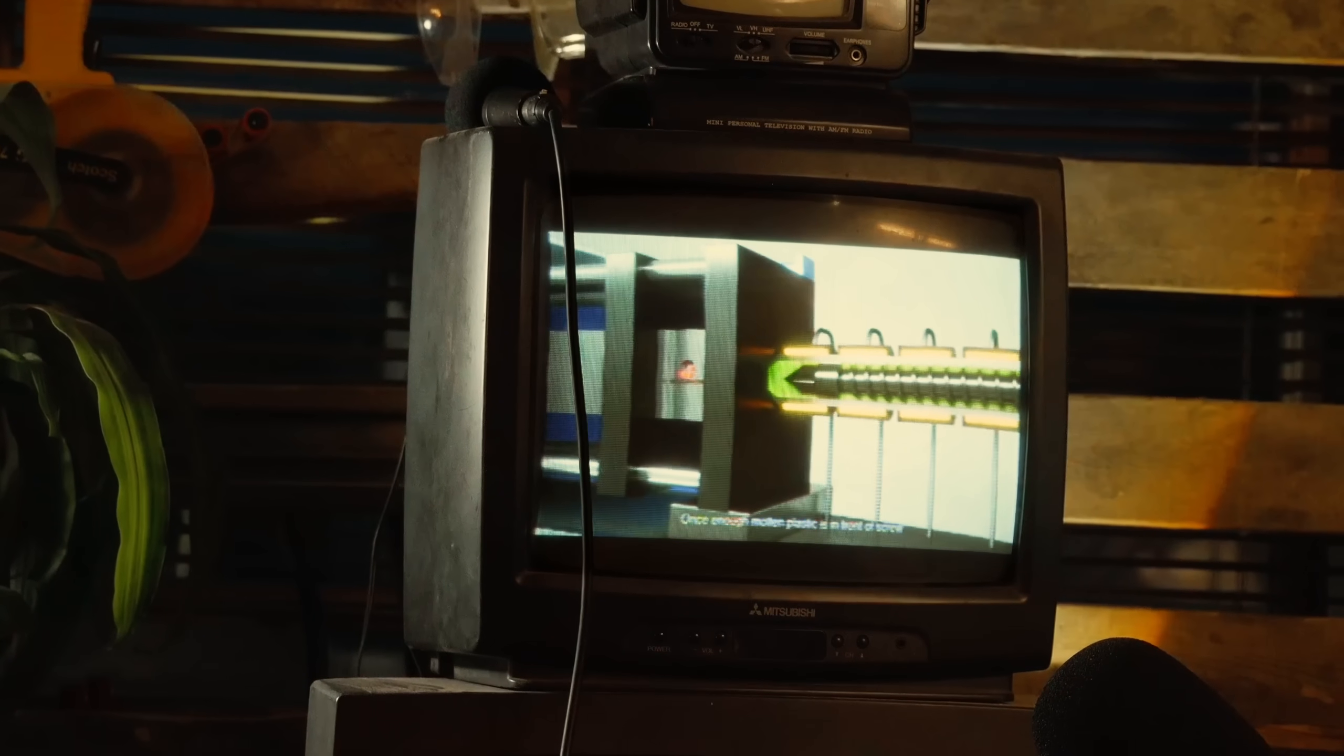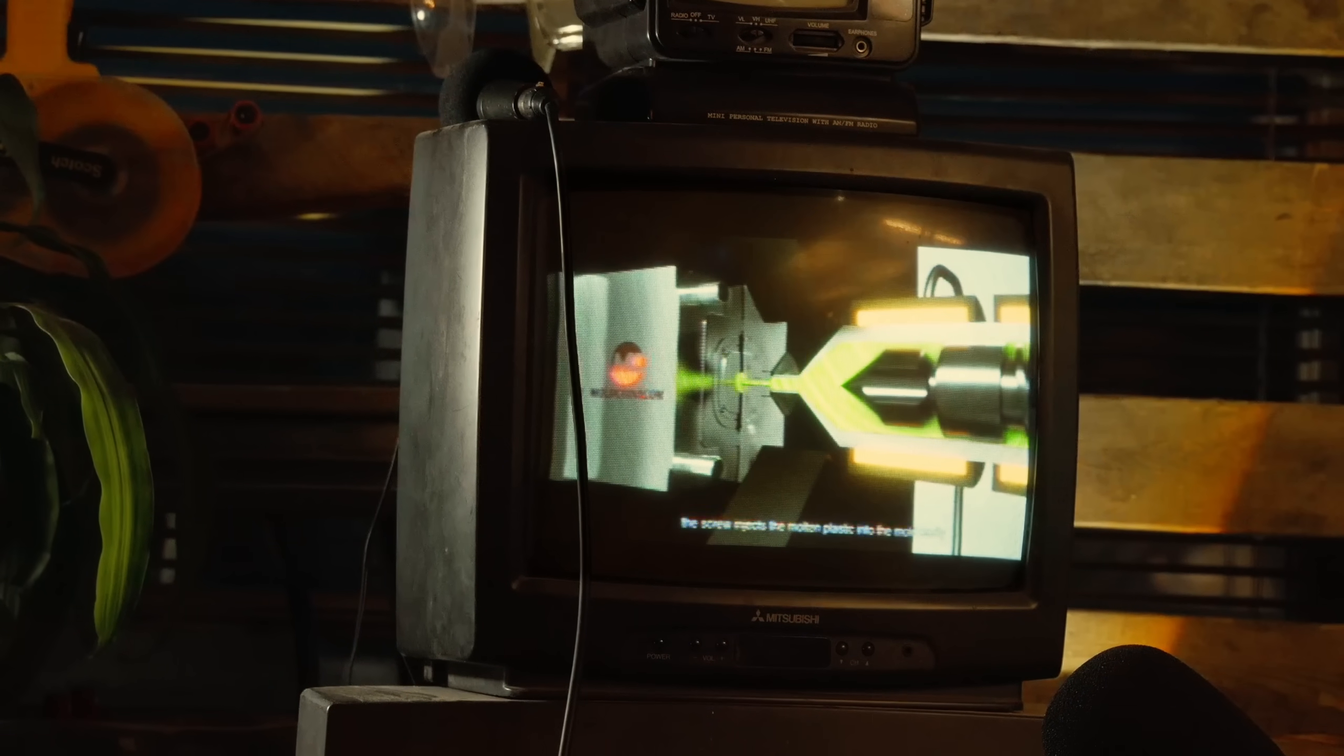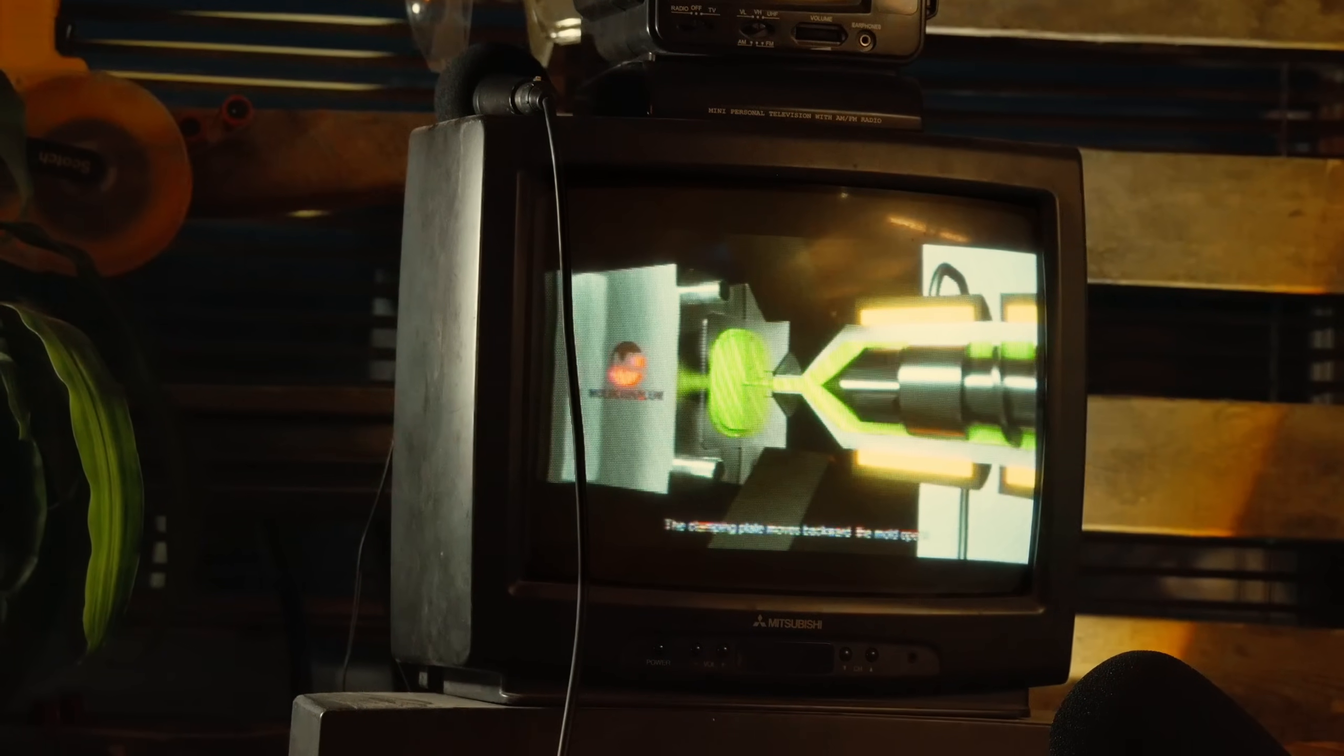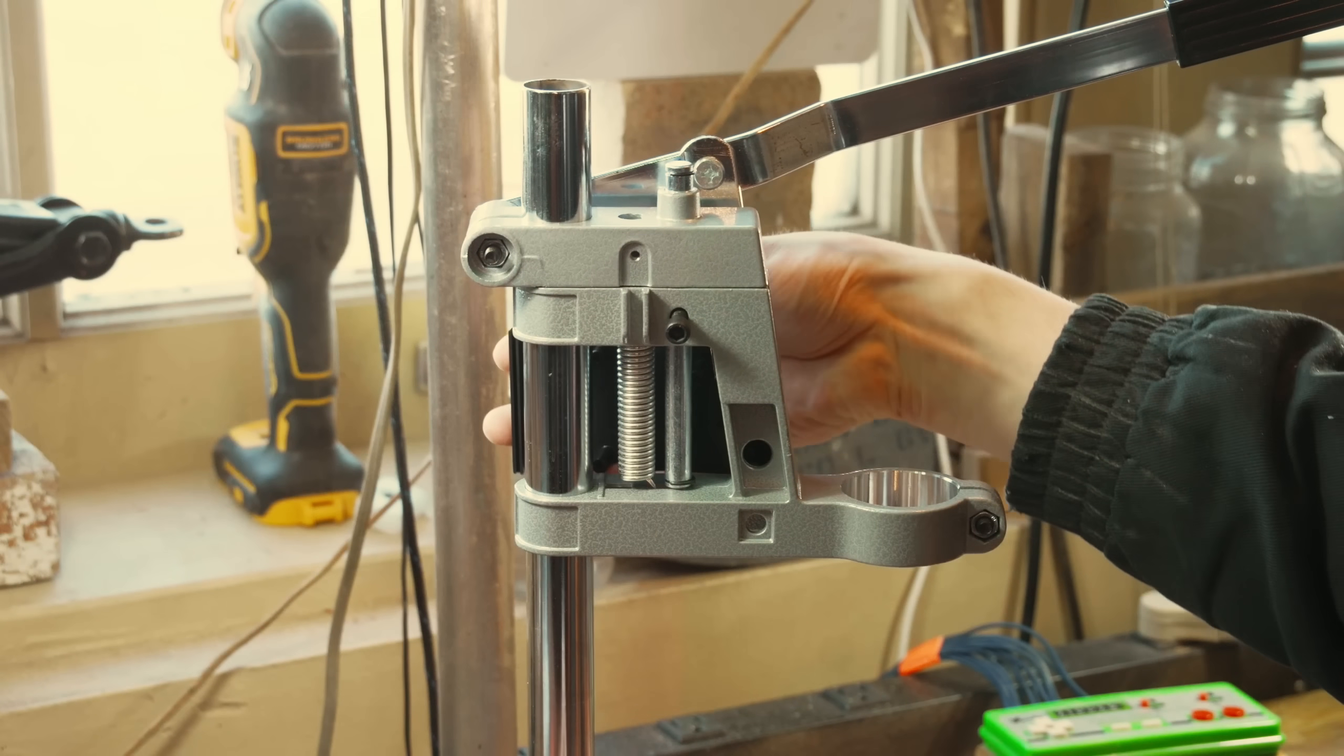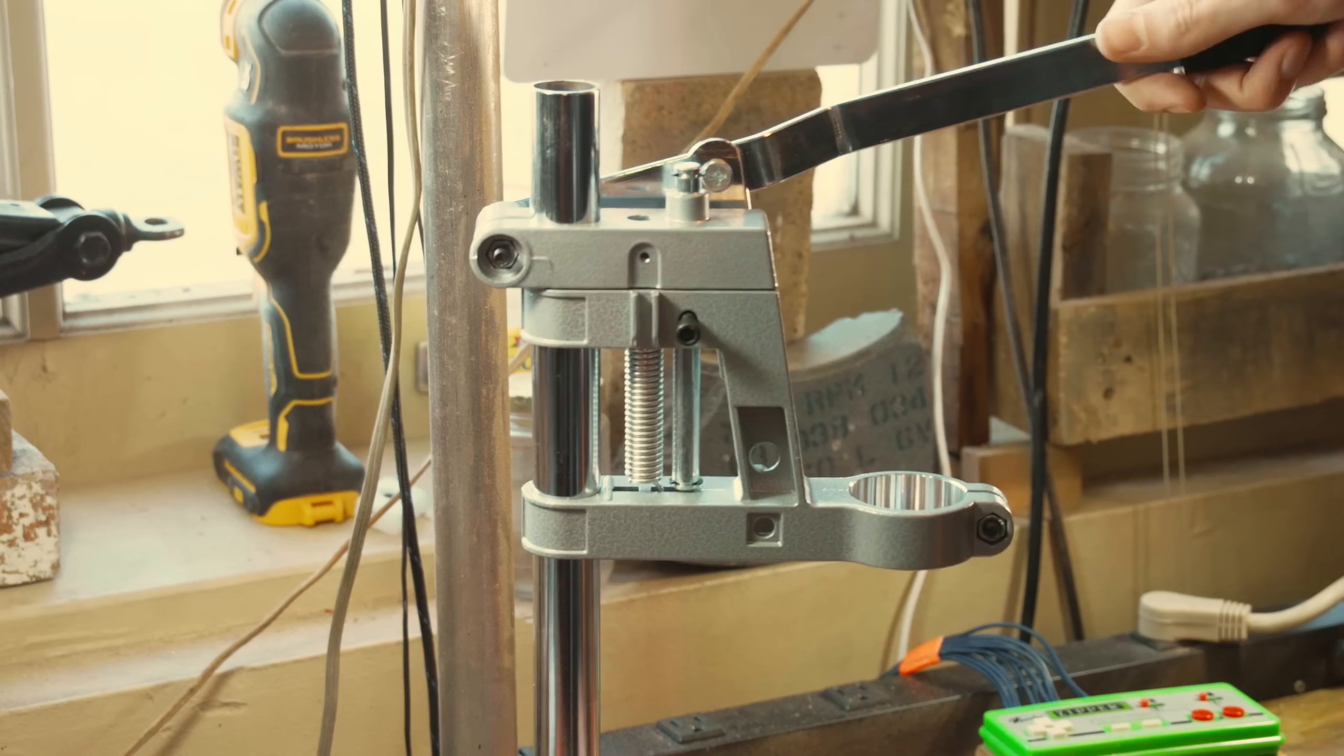The basic concept with injection molding is heating up a medium to its melting point and then injecting it into a negative mold. So all this machine really needs to do is heat up a bunch of plastic and then squeeze it out of a nozzle.